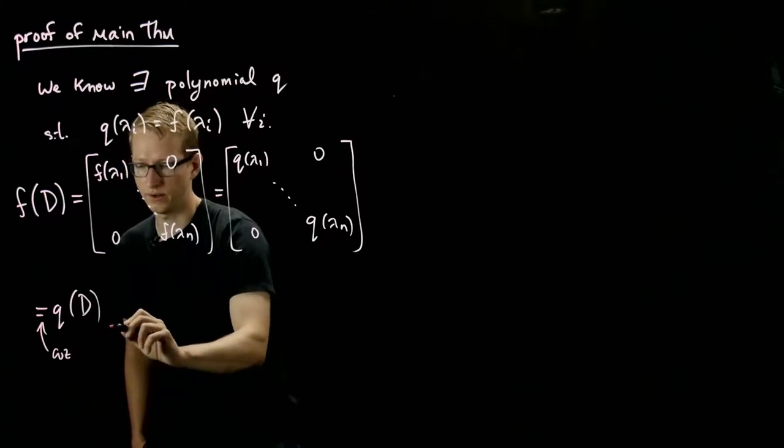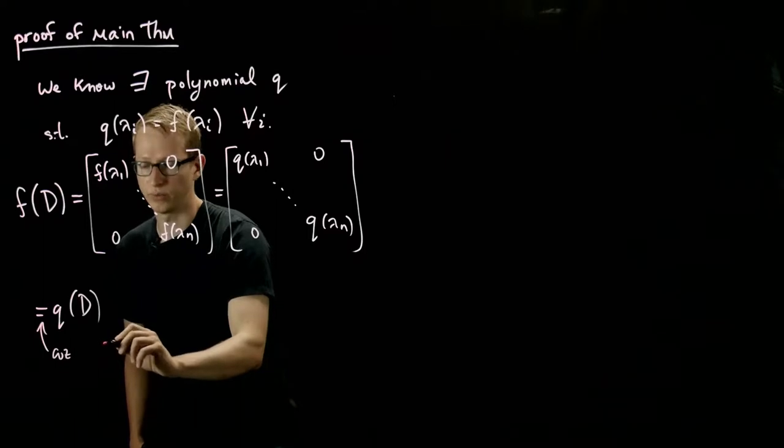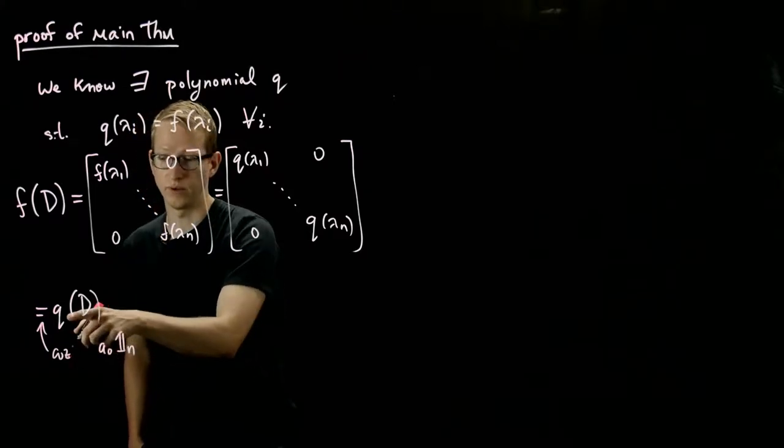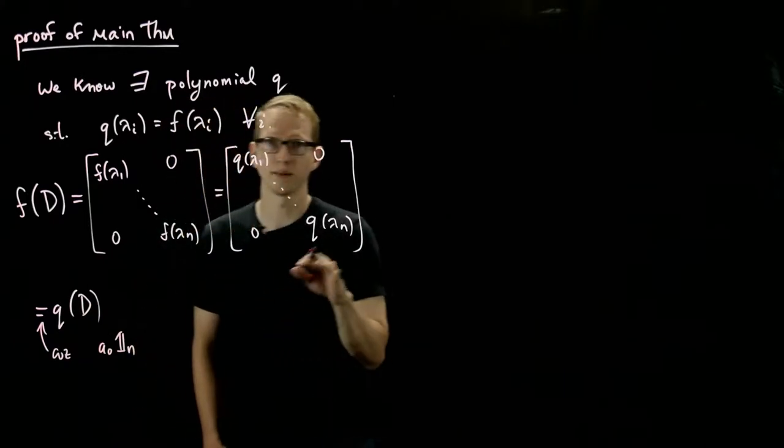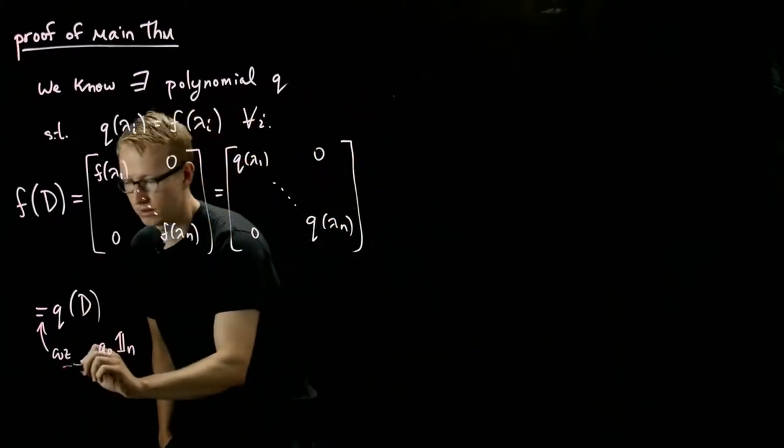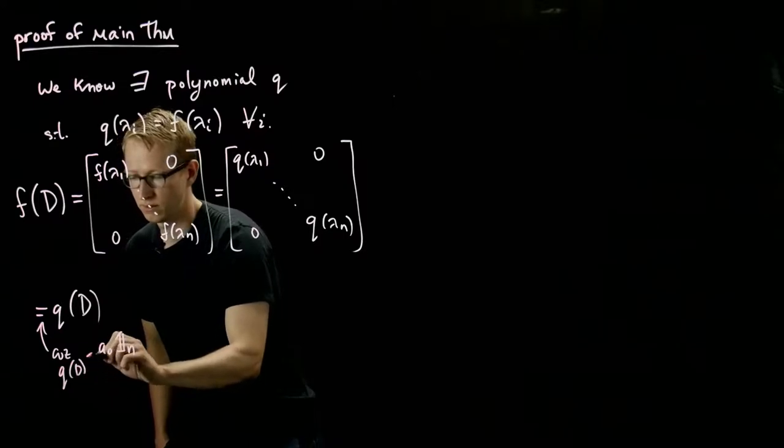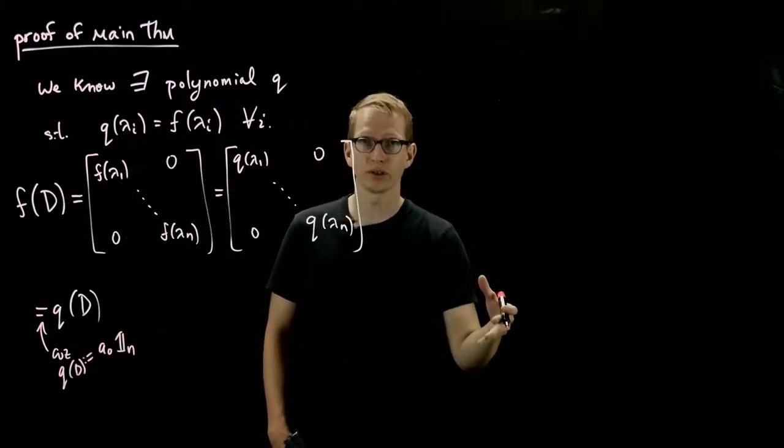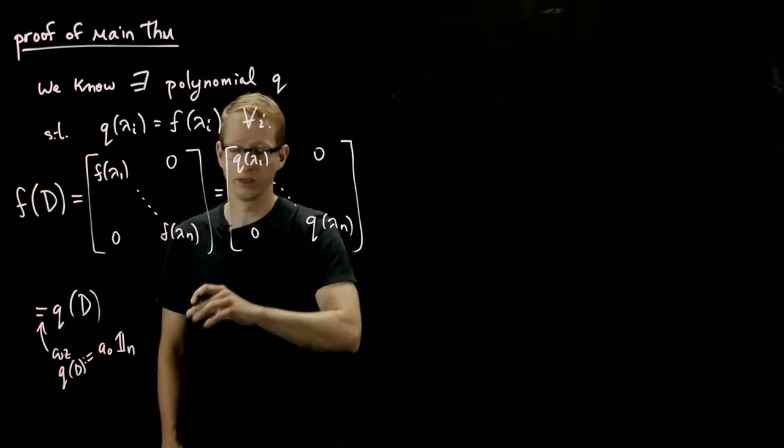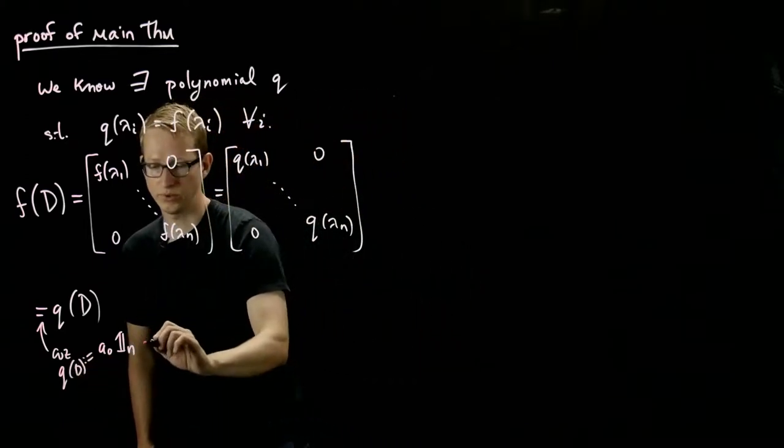If we take our diagonal matrix and then we plug in our polynomial, it was A0 times the identity n by n matrix. This is by definition of a matrix applied to a polynomial, a polynomial with input a matrix.